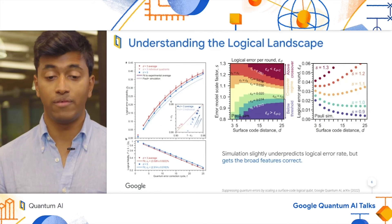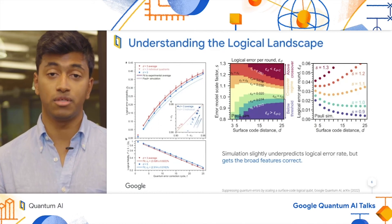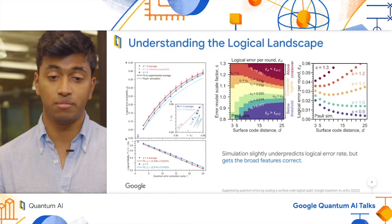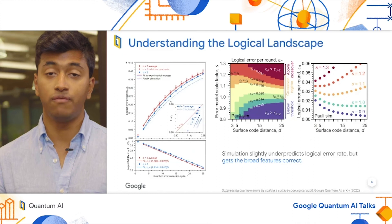On the right, we have a contour plot made using a Pauli-simulator. This simulation slightly under predicts the logical error rate, because there aren't as many error models in the system, but the broad features are correct.